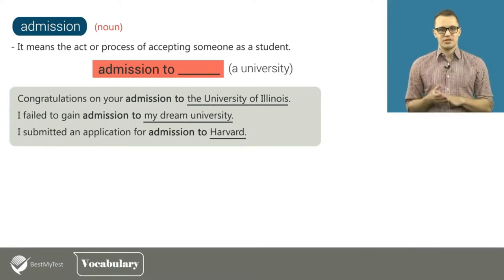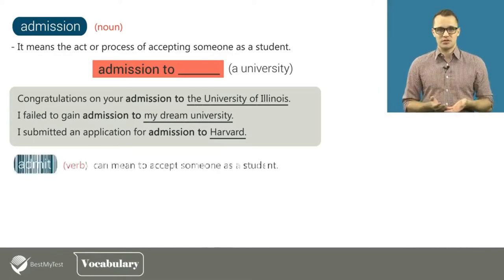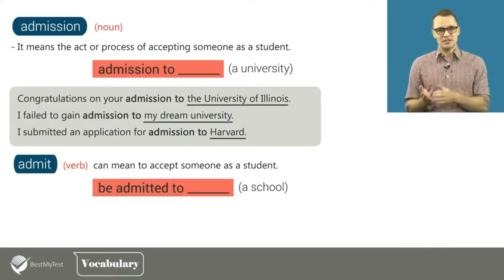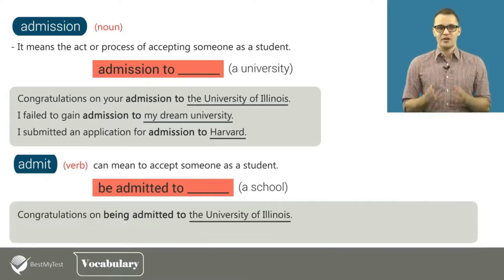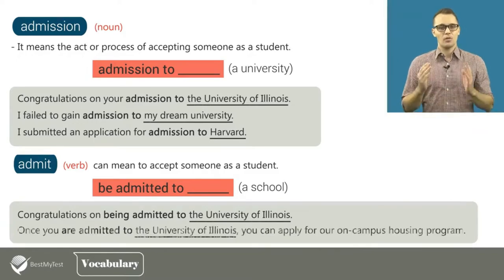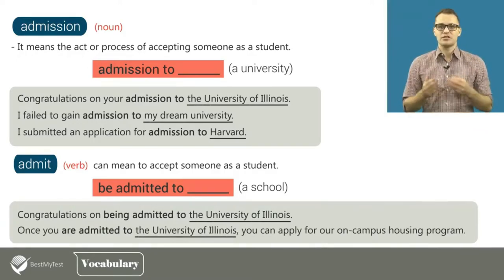Since admission means the act or process of accepting someone as a student, the verb 'to admit' can mean to accept someone as a student. You will often see the pattern 'be admitted to a school' in university letters. For example: congratulations on being admitted to the University of Illinois. Once you are admitted to the University of Illinois, you can apply for our on-campus housing program.